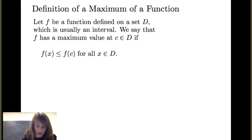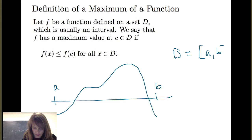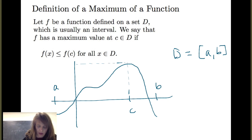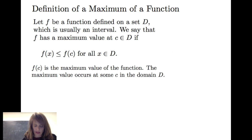If we consider an example, suppose we have a graph that looks like this, and suppose my set D is the closed interval from A to B. The value C is where this maximum value occurs, and we see that f evaluated at C is greater than or equal to f of x for all other x in the domain. We say that f of C is the maximum value of the function, and the maximum value occurs at some point C in the domain.